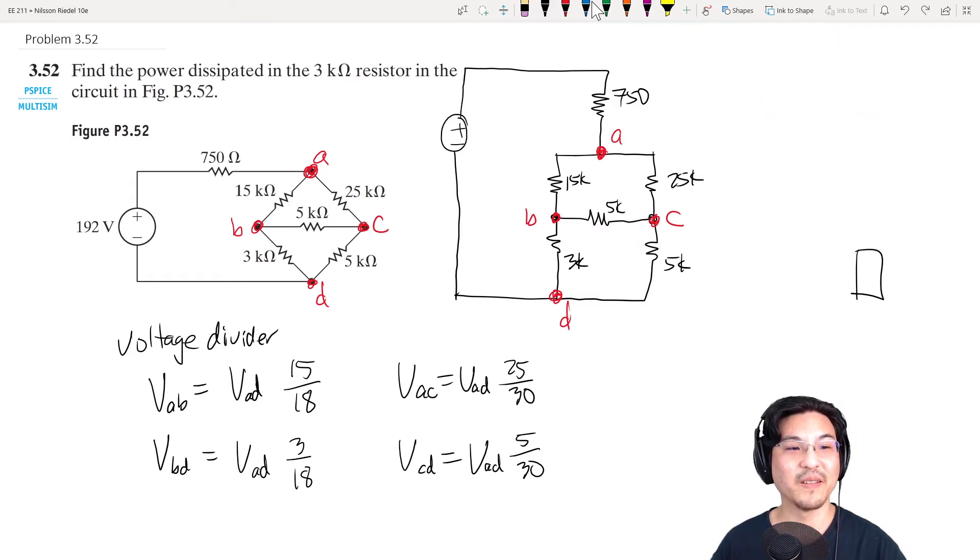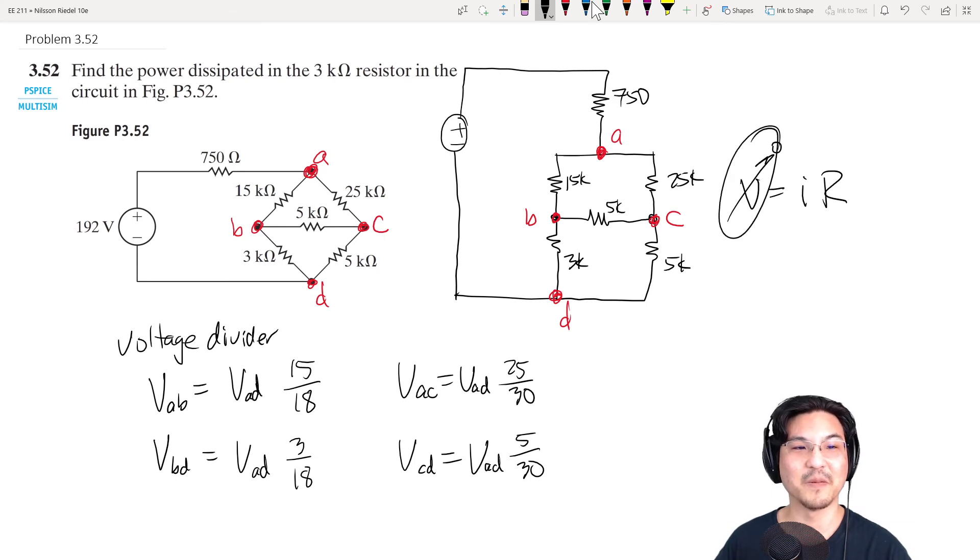So if there's no current, the voltage here equals the voltage here, which means the voltage across this is zero. And if this is zero and this is 5k, that's got to be zero. There's no current here, which means you can just get rid of it. And now look at this circuit. Easier to analyze. You can just combine, I'll just redraw it.